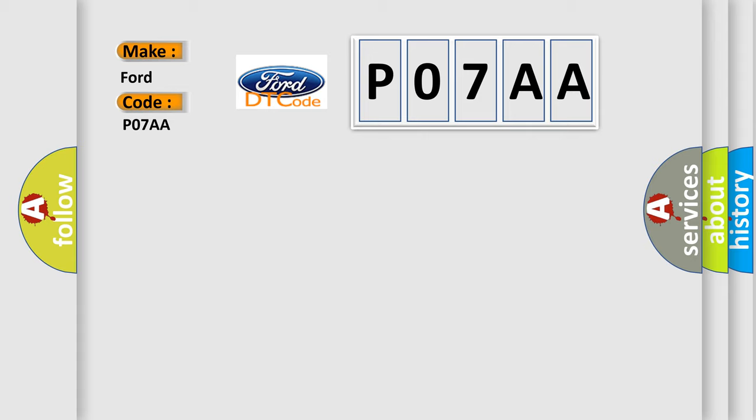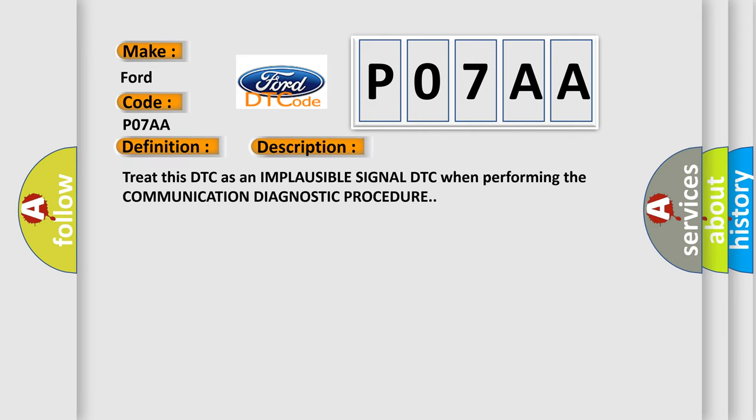The basic definition is implausible data received from ESP. And now this is a short description of this DTC code: Treat this DTC as an implausible signal DTC when performing the communication diagnostic procedure.